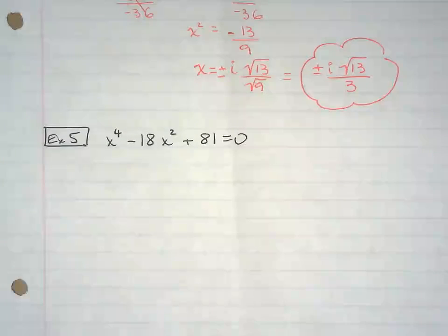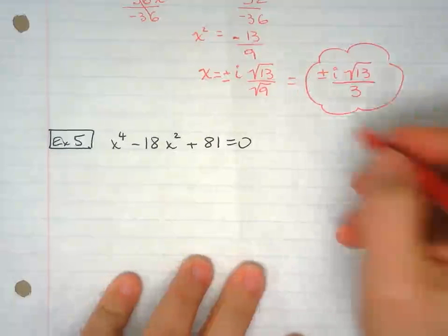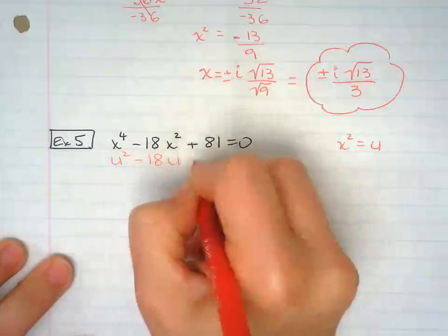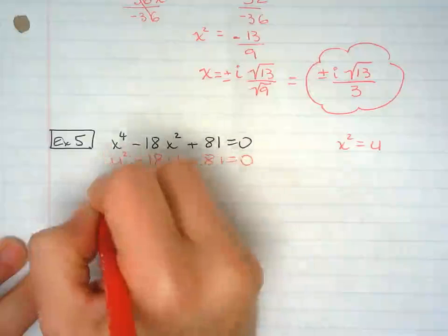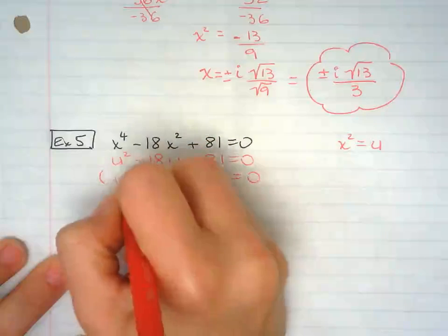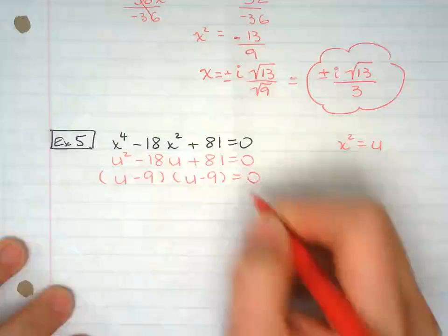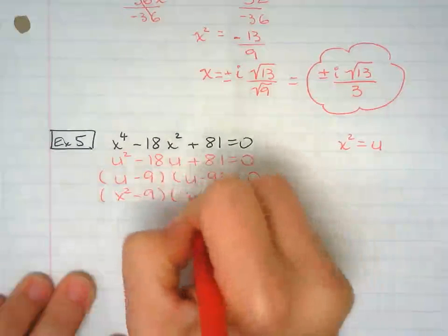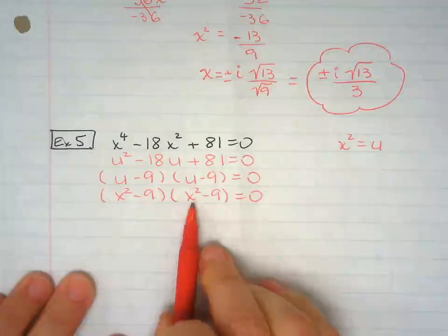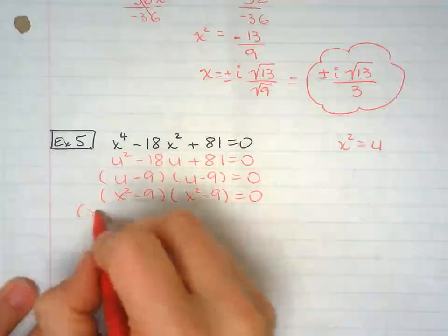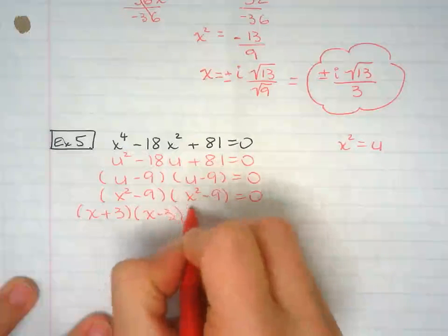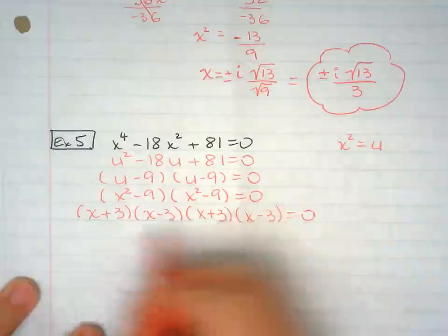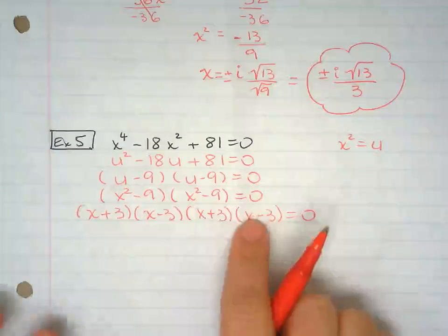This is the last example. Again, I'm going to substitute u for x squared. I'm going to factor mentally. I'm going to switch it back to x squared. I can easily recognize my difference of squares right here. Another one. Set each factor equal to 0, and since they're the same, I don't have to repeat it.